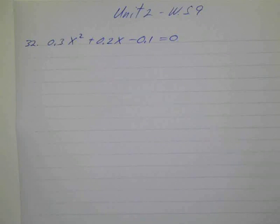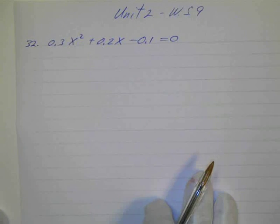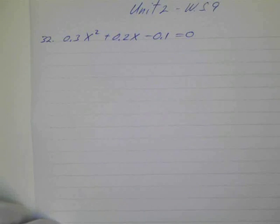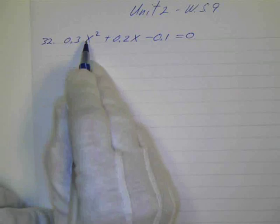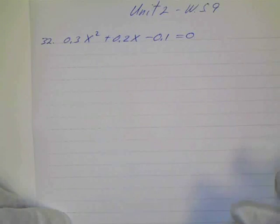Okay, this is number 32, and we're again solving polynomial equations by factoring. And we've got these decimals, and we can always write them as fractions. There's lots of ways to do this. You can just multiply everything by 10, and that's going to move the decimal point one place to the right.